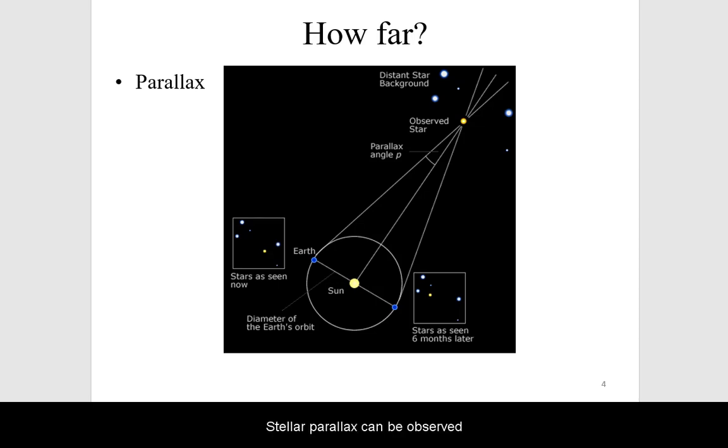Stellar parallax can be observed due to the orbit of the Earth around the Sun, which makes nearby stars appear to shift position relative to farther away stars throughout the year.